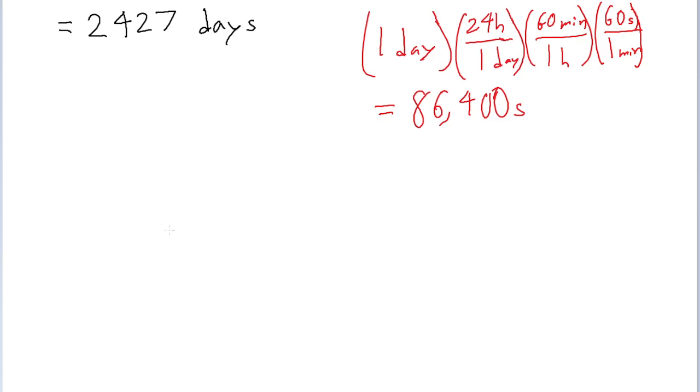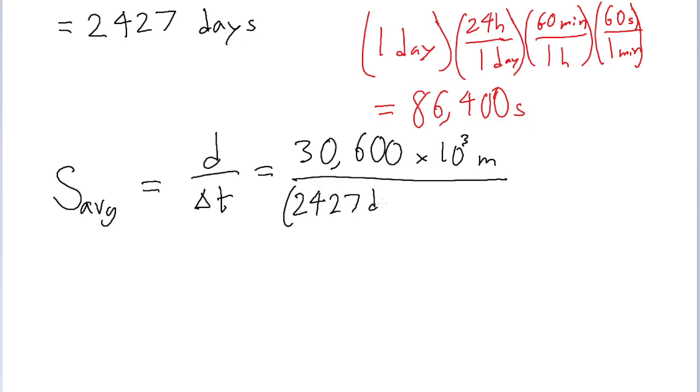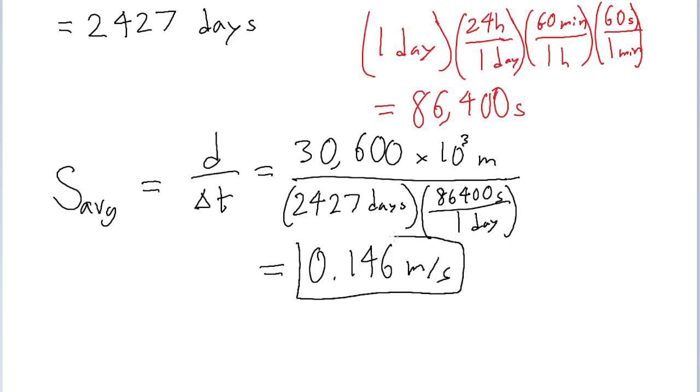So now we'll just use the average velocity formula. Or the average speed, rather, because it's only asking for magnitude. So the average speed is equal to distance divided by the time interval. And the distance in the problem is given as 30,600 kilometers. So that's 30,600, and we multiply by 10 to the power of 3 to convert into meters. And then divide by the time interval of 2,427 days, applying the unit conversion into seconds. So that's 86,400 seconds per day. Put that into a calculator and we find the average speed to be 0.146 meters per second.